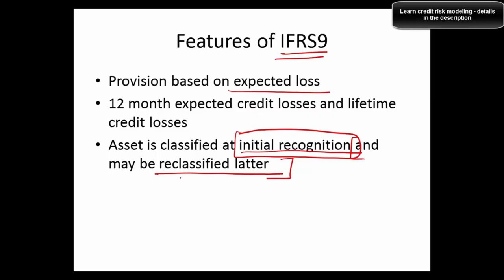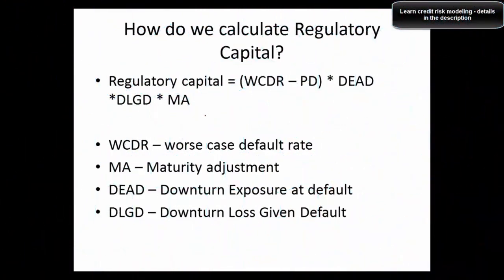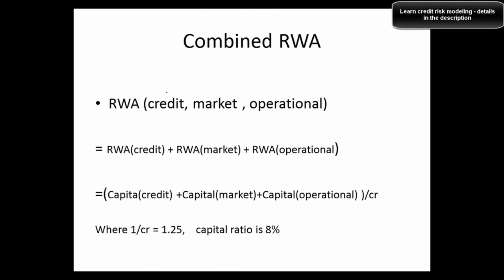What are the objectives of building a credit rating model? Key objectives include: calculation of default probability for RWA calculations and economic risk capital (ERC) calculations, reporting from credit positions to senior management, and supporting credit lending decisions. How do you calculate regulatory capital? The formula uses WCDR (worst case default rate), MA (maturity adjustment), EAD (downturn exposure at default), and DLGD (downturn loss given default) to compute regulatory capital.